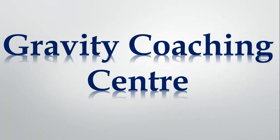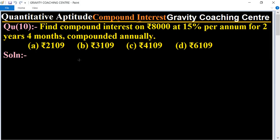Welcome to our channel Gravity Coaching Centre, Quantitative Aptitude chapter Compound Interest. Question number 10: Find compound interest on ₹8000 at 15% per annum for 2 years 4 months compounded annually. In this question, the given principal...